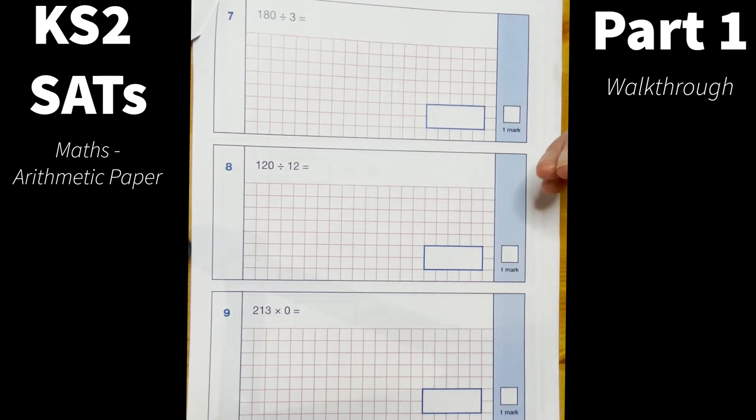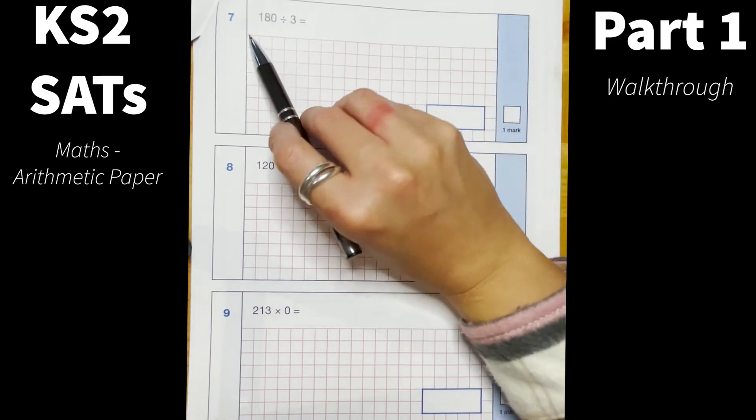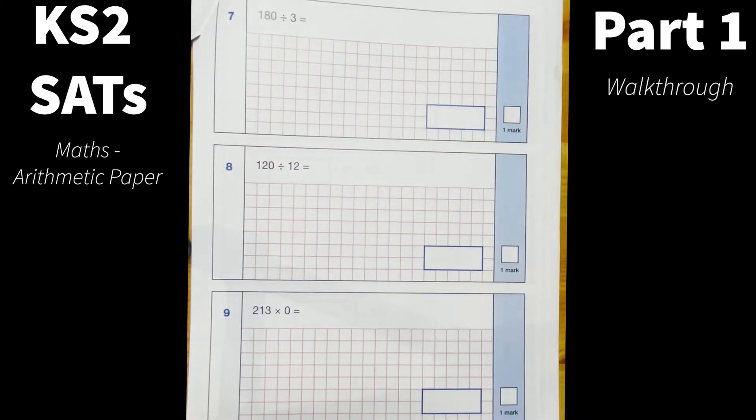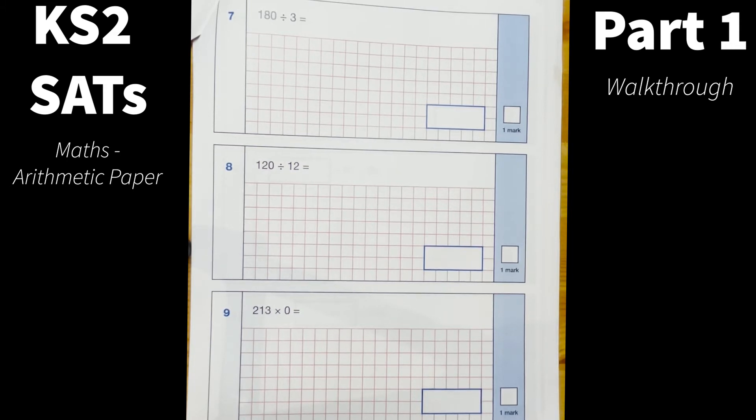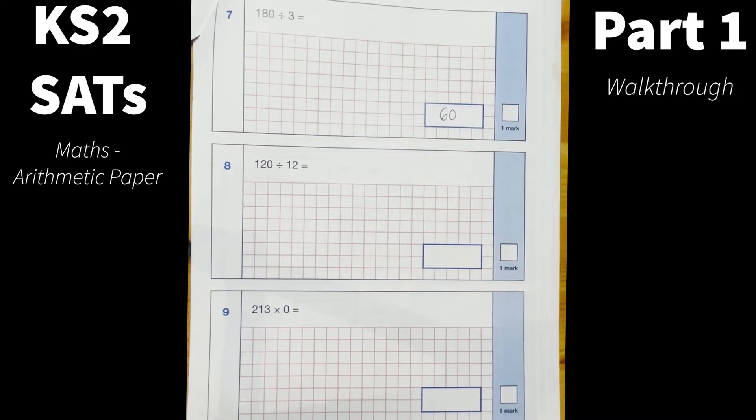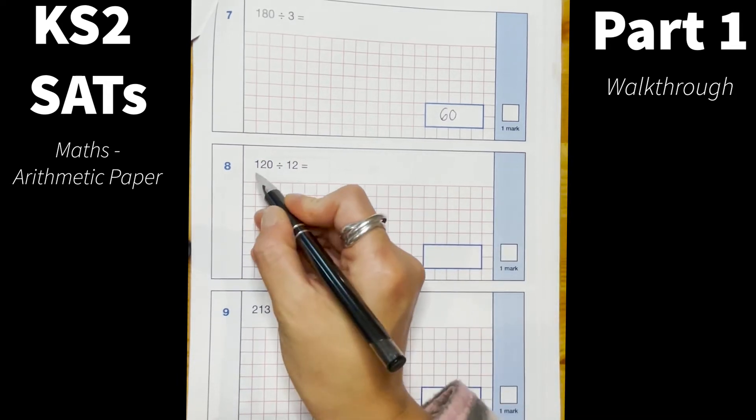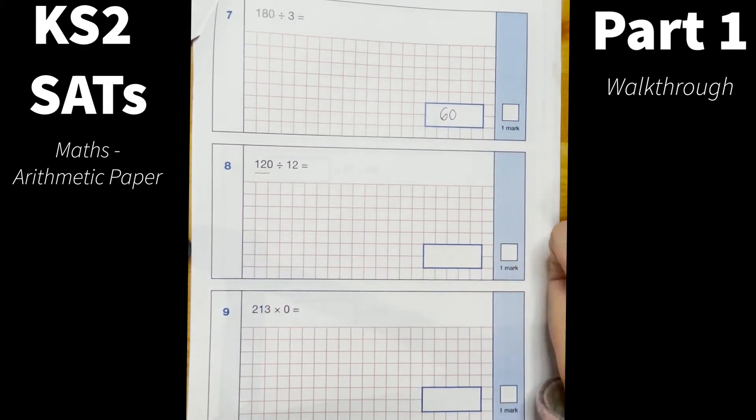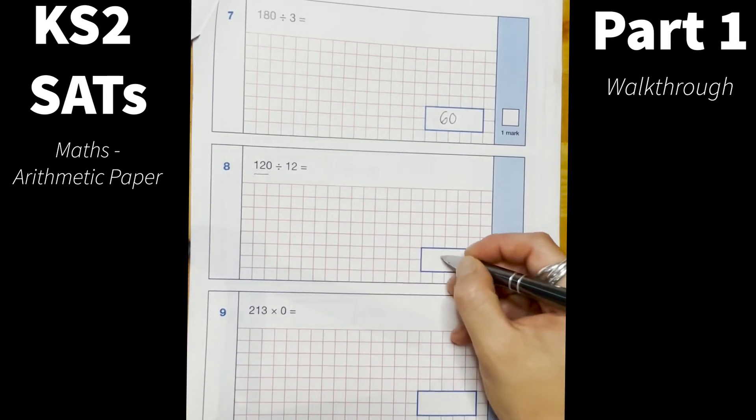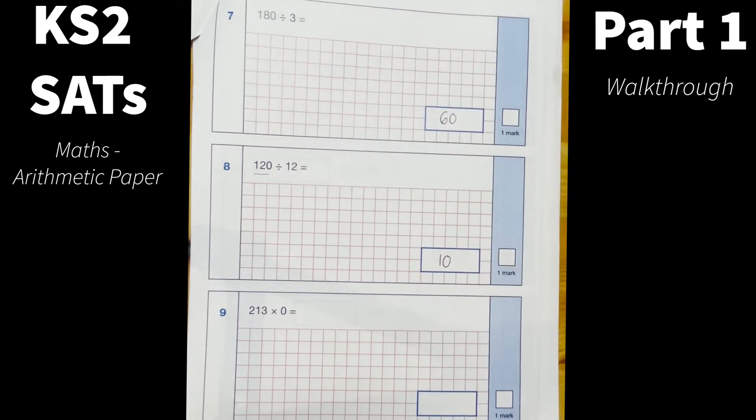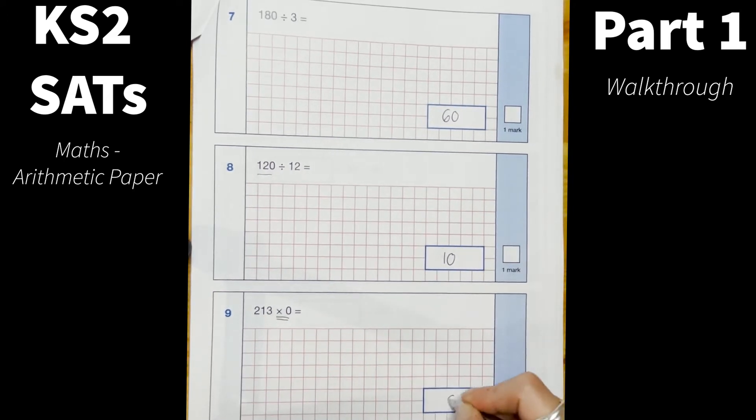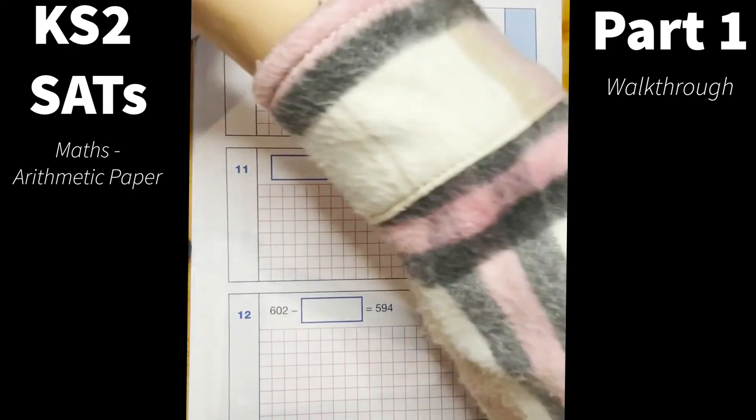Okay number 7, 180 divided by 3. Now children should be able to recognize that 180 is in fact a multiple of 3 if they know their known facts. We know that 6 times 3 is 18, so they would know that 60 times 3 would give us 180, so 180 divided by 3 would give us 60. And again similar question here, 120 is a multiple of 12. I know that I need to times 12 by 10 to get 120, so 120 divided by 12 is going to give me 10. And number 9, anything times by 0 is always going to be 0, that's just something that children need to know and remember.